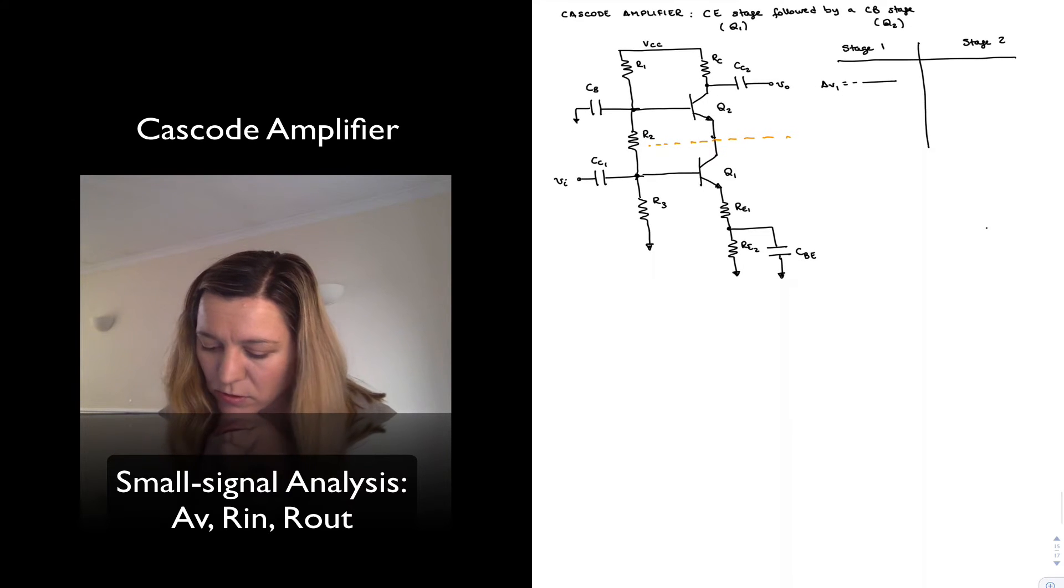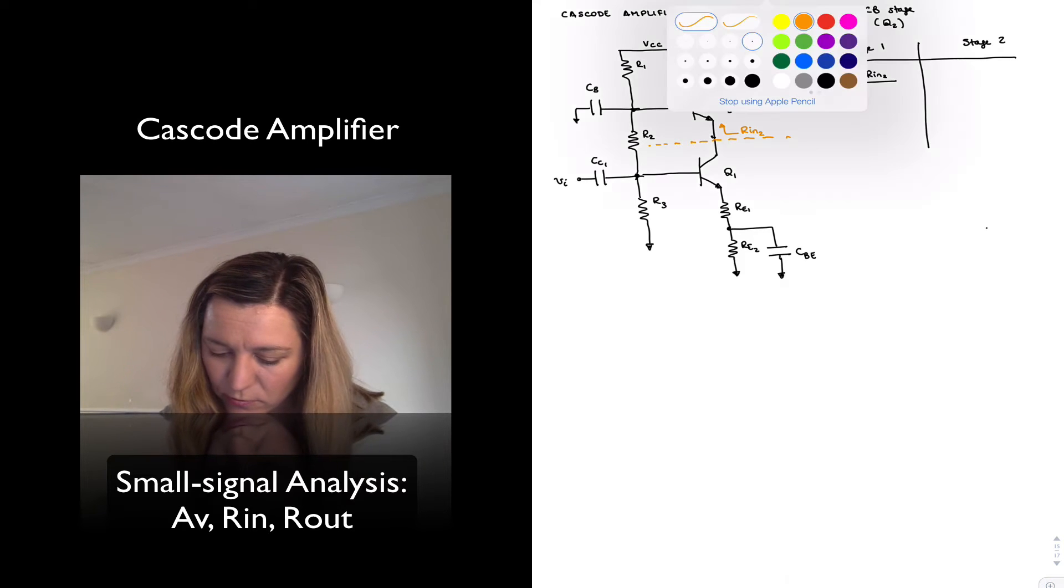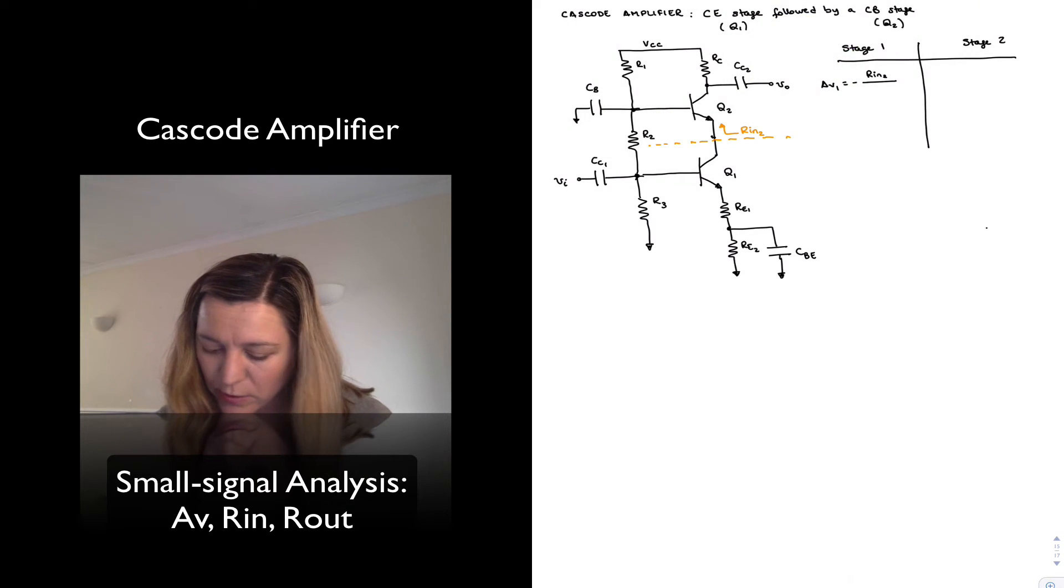And so that's going to be equal to negative whatever input resistance I have looking into my stage 2. That's RIN2 divided by little re1 plus capital RE1. Since RE2 gets bypassed by that emitter bypass capacitor CBE.